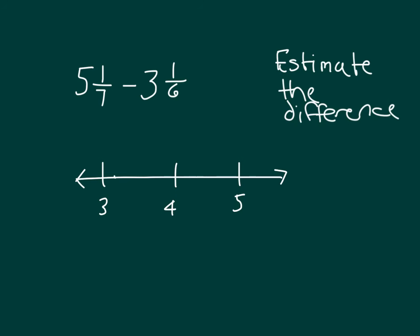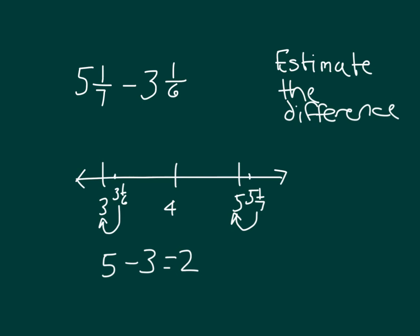3 and 1 sixths would be right about there on the number line, and as you can see, it would round to 3. 5 and 1 sevenths is a little bit past 5 and that would round to 5. So we have 5 minus 3, which equals 2. Our estimated difference for 5 and 1 sevenths minus 3 and 1 sixths is 2.